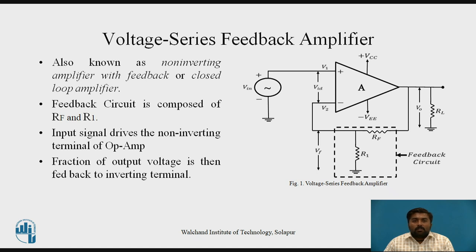It is also called a closed loop amplifier. The feedback circuit is composed of RF and R1. The input signal drives the non-inverting terminal of the op-amp, and the fraction of output voltage is then used as an input to the inverting terminal of the op-amp.